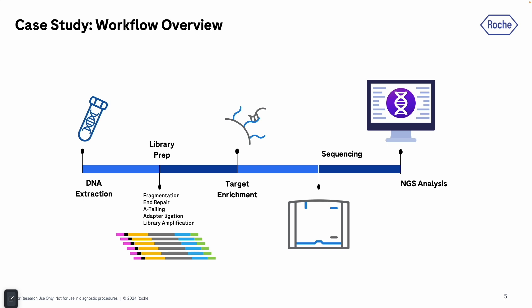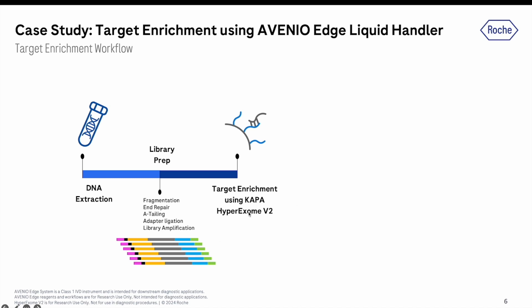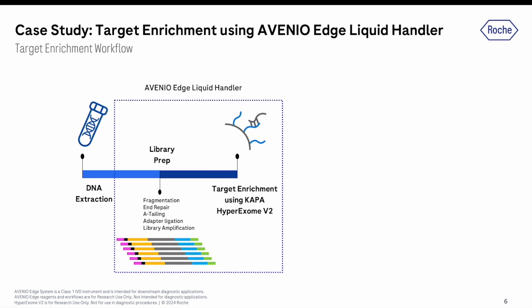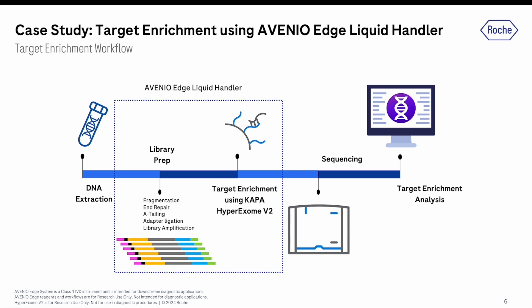For our case study, sequencing data from genomic-like DNA libraries are prepared using the KAPA HyperExome V2, which is designed to capture more content from key genomic databases. We use the Avenio Edge system, a fully automated IVD liquid handler that does end-to-end library preparation, target enrichment, quantification, normalization, and pooling. Once our libraries are prepared, we move to sequencing using Illumina's NovaSeq, and then proceed to the bioinformatics side for target enrichment analysis.